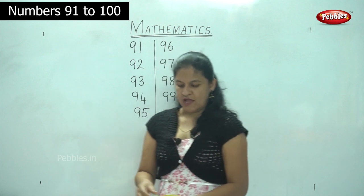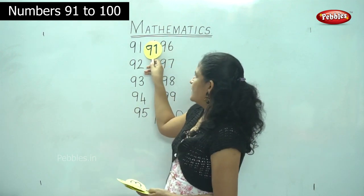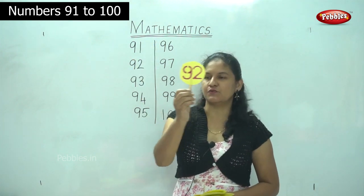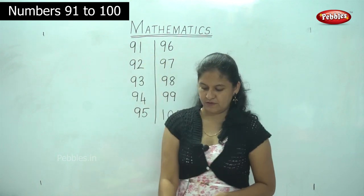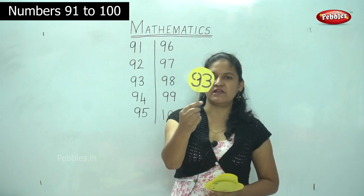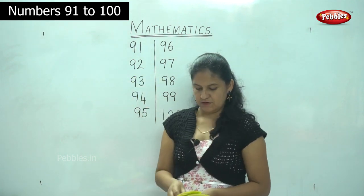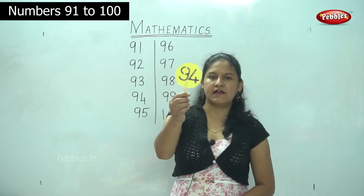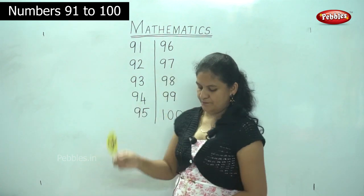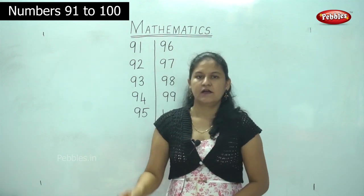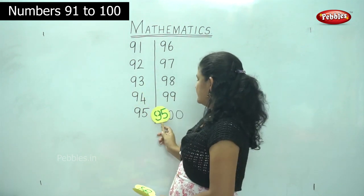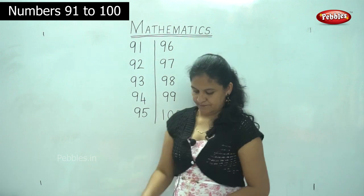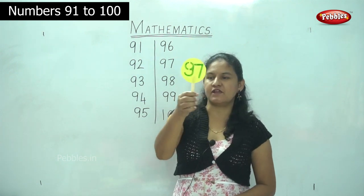9 and 1: 91 — that is written on the board. 9 and 2: 92. 9 and 3: 93. 9 and 4: 94. 9 and 5: 95. 9 and 6: 96. 9 and 7: 97.